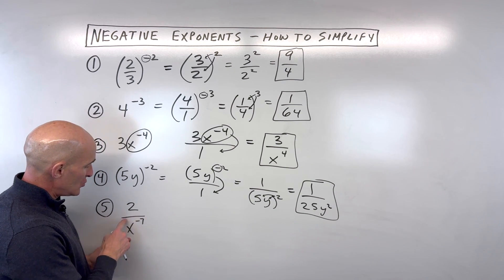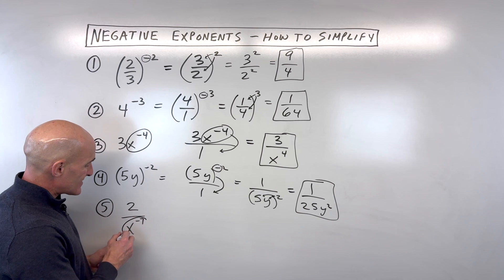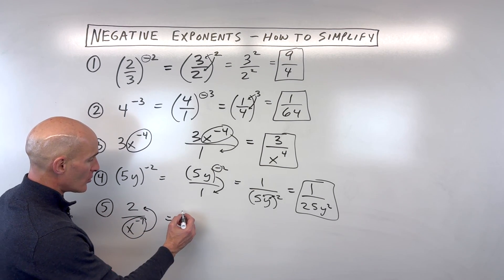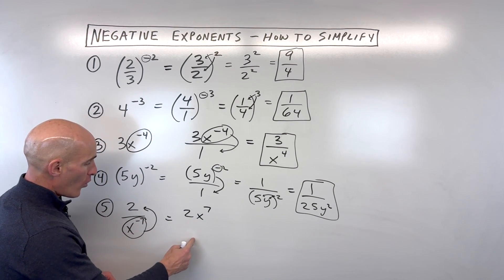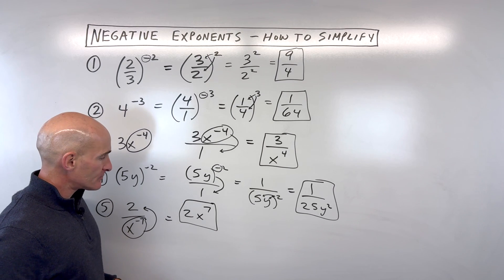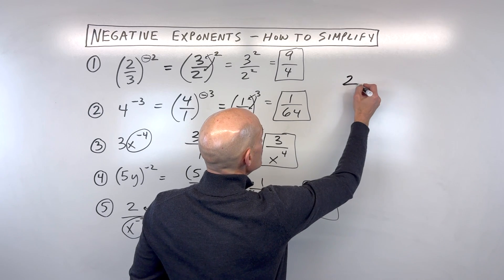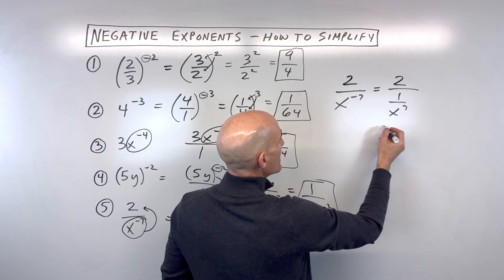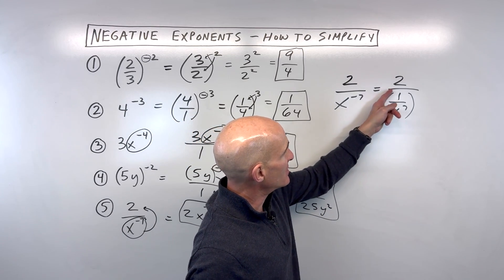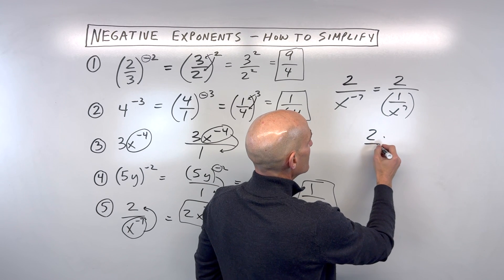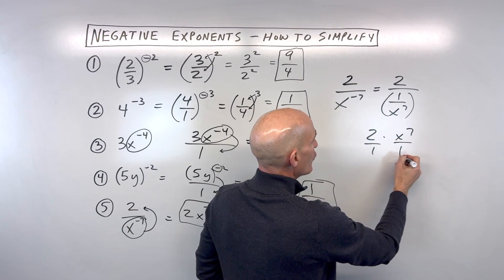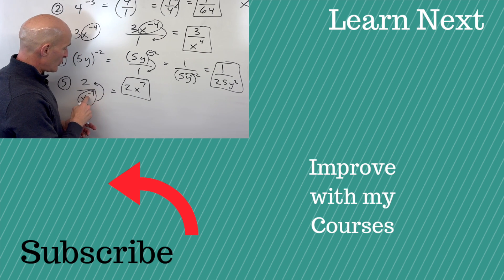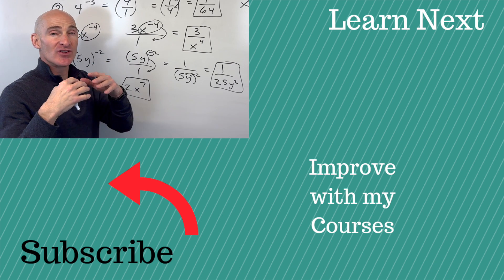Last example — see if you can try this one. We've got 2 divided by x to the negative 7. Notice this quantity is in the denominator. We can move it to the other side of the fraction bar and change this from negative 7 to positive 7. So this is going to be 2 times x to the 7th over 1, but anything divided by 1 is itself. Another way to see it: x to the negative 7 is really like 1 over x to the positive 7. But then we have a complex fraction, and dividing by a fraction is the same as multiplying by the reciprocal — so flipping it gives us that same result of 2x to the 7th. The shortcut: when you see the negative exponent, move that quantity to the other side of the fraction bar.